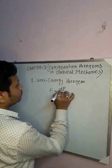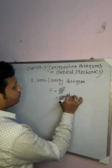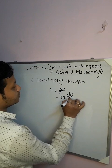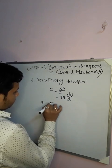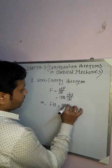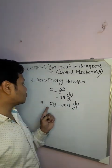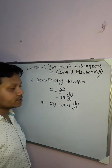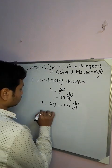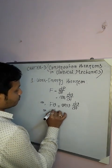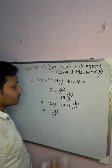Force equals rate of change of linear momentum, or we can write m times dv/dt. Now if we multiply both sides by v, this becomes mv(dv/dt). Force multiplied by velocity means power, and power means the rate of change of work done.